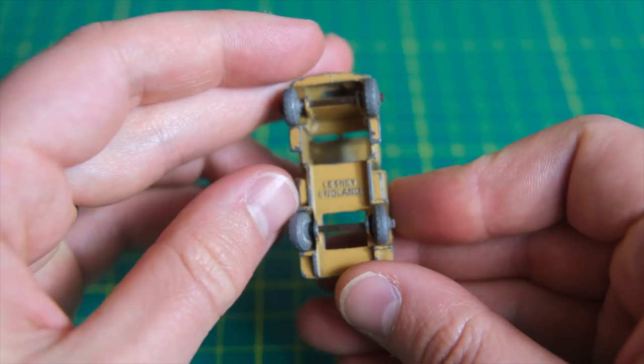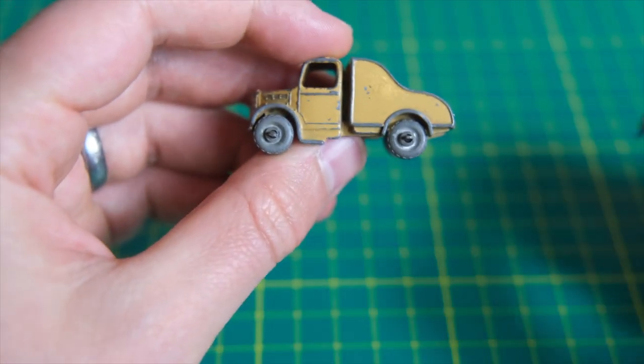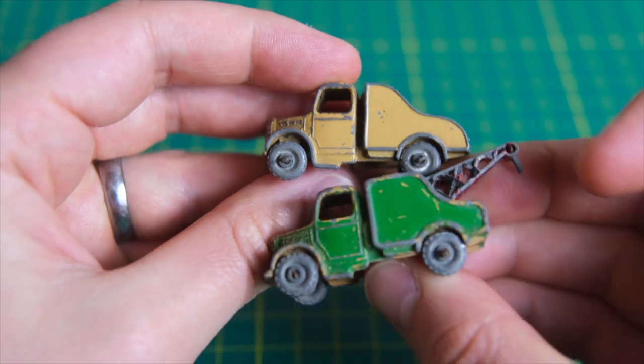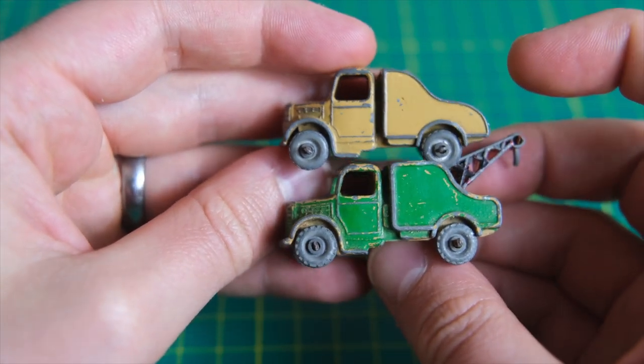This ran until 1960 when it was replaced by a Thames Wrecker. Here is the most notable difference between the two models. The back section has an extended flat top.